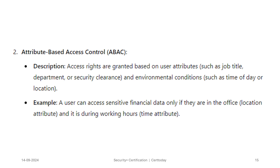Another method of authorization is attribute-based access control, or ABAC. In this method, access rights are granted based on user attributes. An example would be a user who can access sensitive financial data only if they are in the office — that's the location attribute — and it is during working hours, which would be the time attribute.